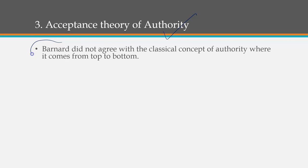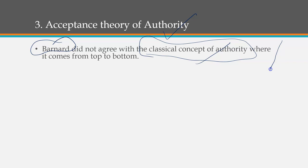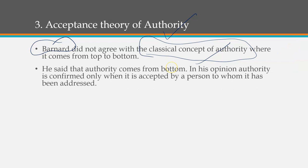The third contribution of Chester Bernard was the acceptance theory of authority. Bernard did not believe in the classical concept of authority. The classical concept held that authority always flows from top to bottom — those at the top have authority, while those below have none and are just accountable for their work.